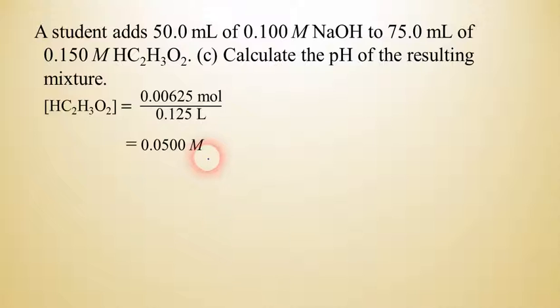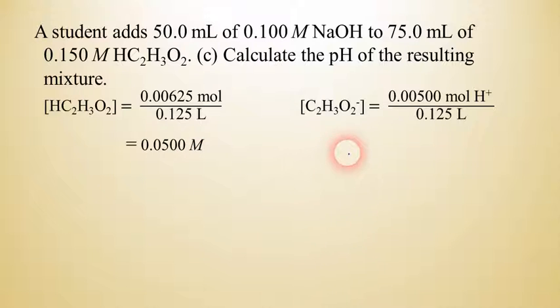We're going to do the same thing with the acetate we got from the problem earlier that it's 0.00500 moles of the, that should say acetate ion, rather. And we're going to divide that by the same volume, 0.125 liters. And the answer that we get is about 0.0400 molar. We have these two values here. It's a weak acid, and there's some of its conjugate base.